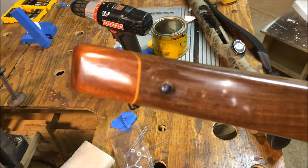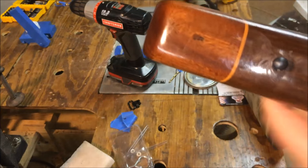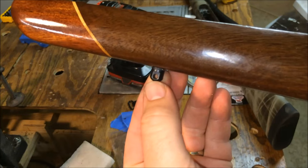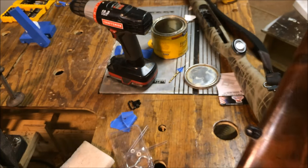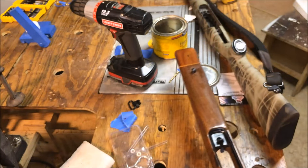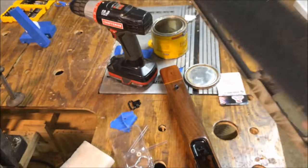So that is how you install sling swivel studs. Let's rub the wax into the gun stock. And now I have studs for attaching a sling whenever I finally get around to getting a nice sling. So I've got this little cheap one right here that came on the original gun stock.